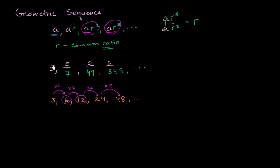In the last video, we saw that a geometric progression or a geometric sequence is just a sequence where each successive term is the previous term multiplied by a fixed value. And we call that fixed value the common ratio.